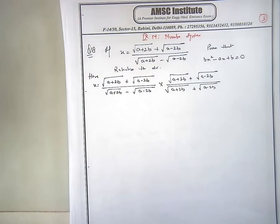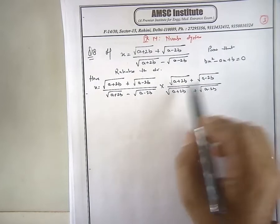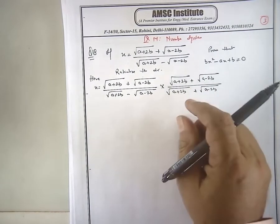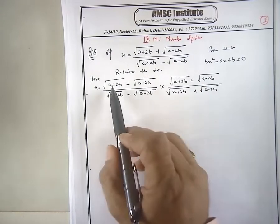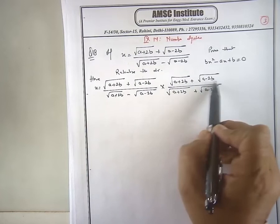So I am saying the numerator is a plus 2b plus a minus 2b, a plus 2b plus a minus 2b. These are identical. Multiply them together. What should I have?